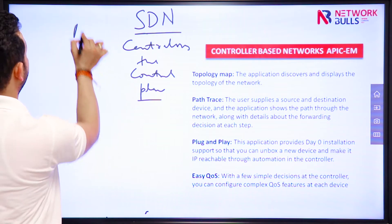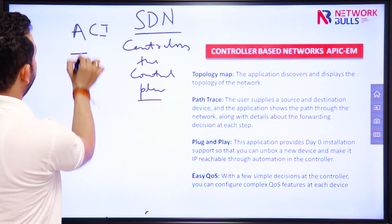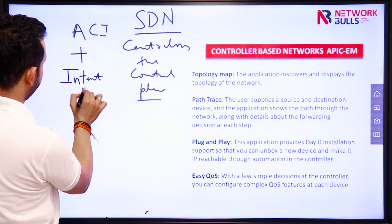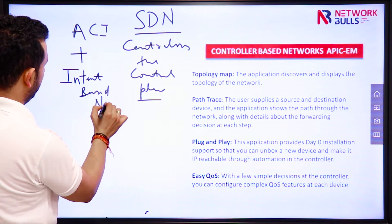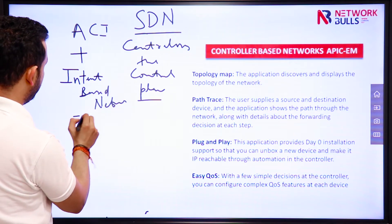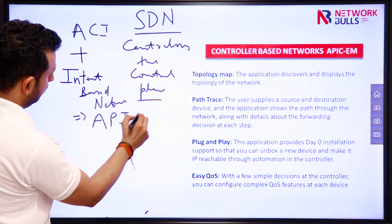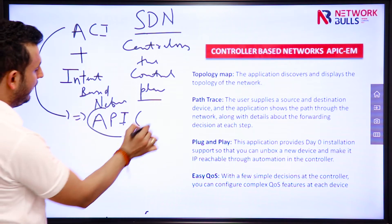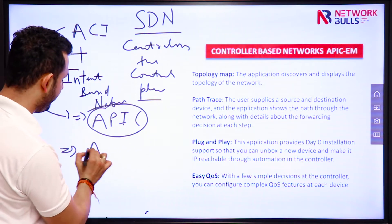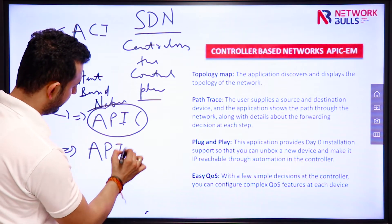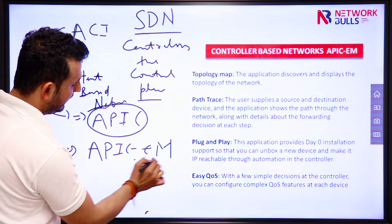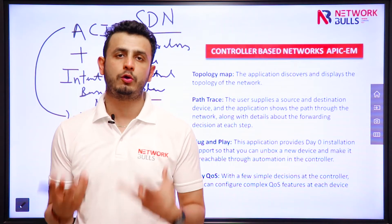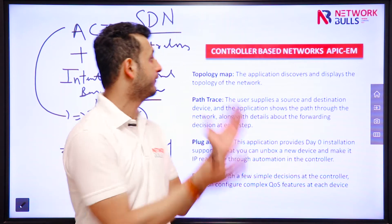First of all, Cisco came up with the concept of ACI in the data center. Then with ACI, Cisco added intent based networking and named it APIC. So Cisco moved from ACI to APIC in the data center, and side by side Cisco came up with the concept of APIC-EM, the APIC Enterprise Module. APIC-EM is basically an example of controller based networks.